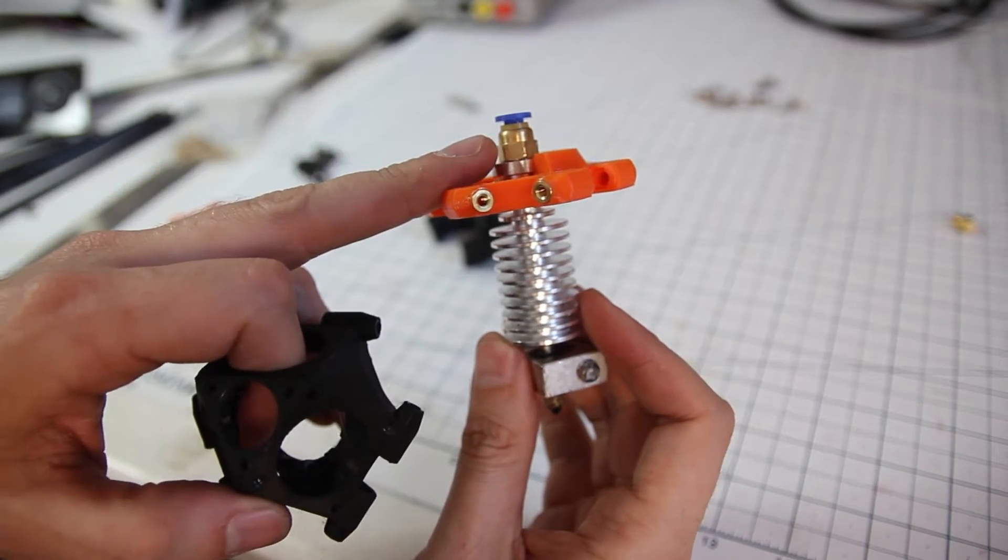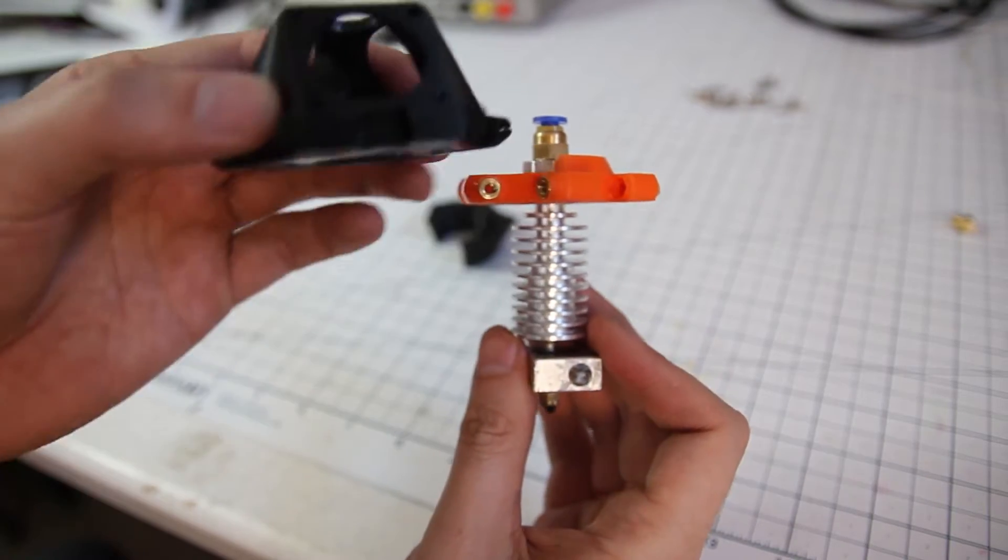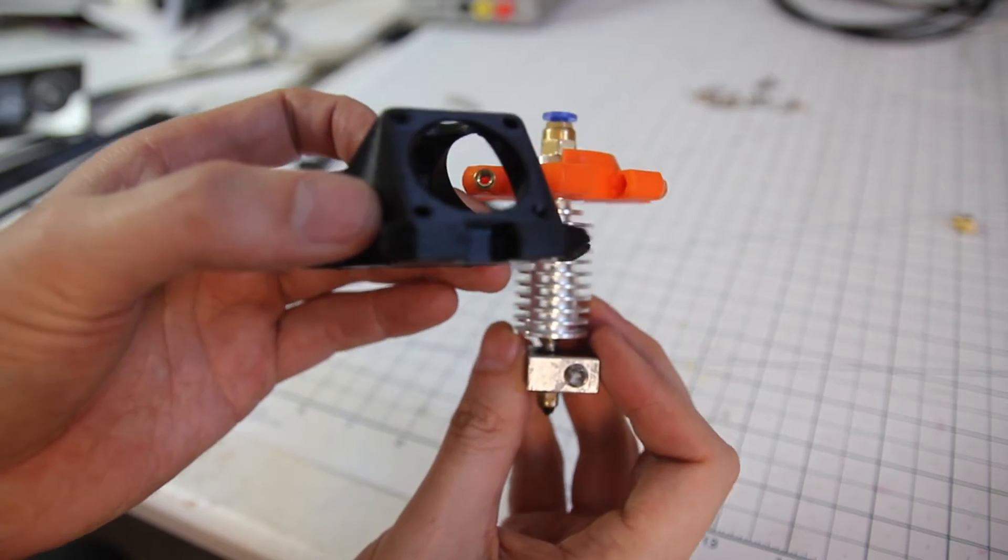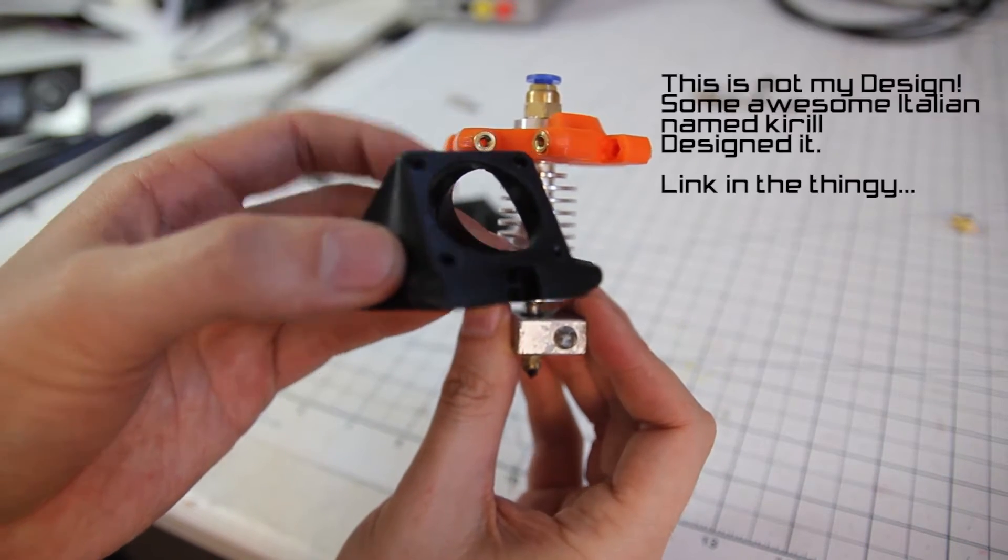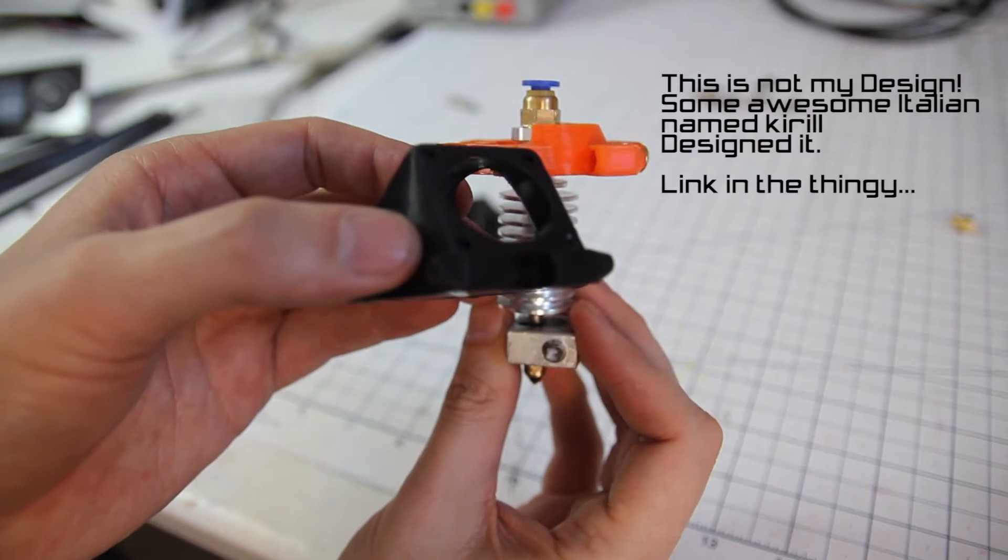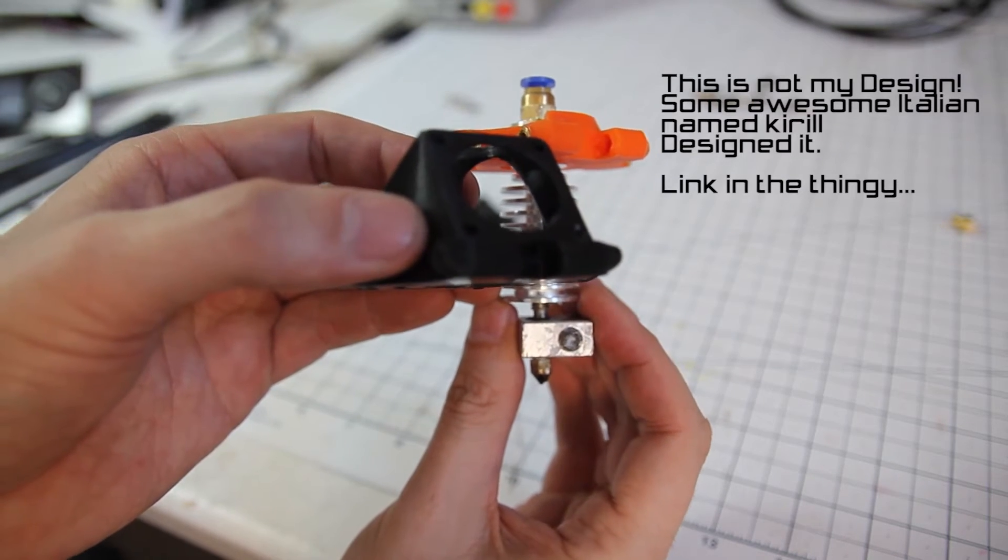You can see here's the old mount for the hot end and this is the new one. This actually allows the hot end to mount much further up, which brings the fans above the rods. That's gonna help us reduce the play quite a bit.